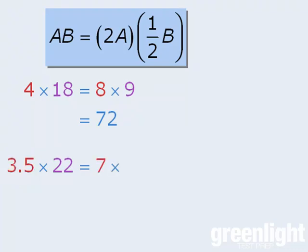Now if we double one number, we must halve the other number. As you can see, finding the product of 7 and 11 in our heads is much easier than finding the product of 3.5 and 22.